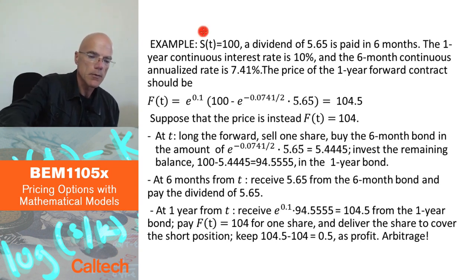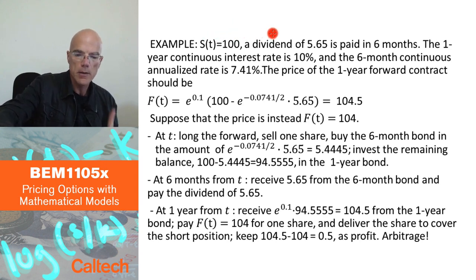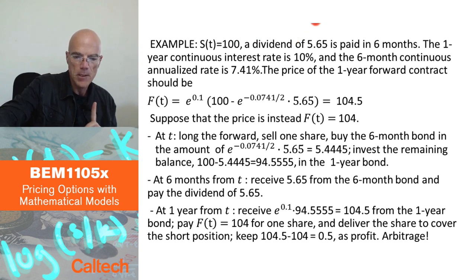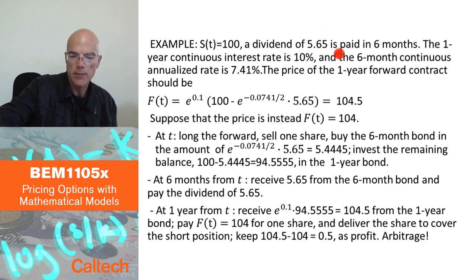So, let's assume that we have a stock which costs $100 today, and we know that in the next year there's going to be only one dividend paid, and it's going to be $5.65 paid in six months.